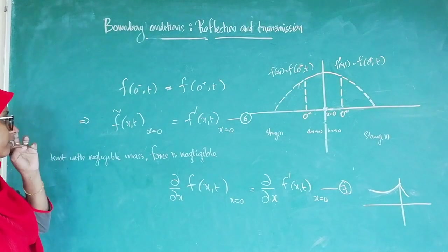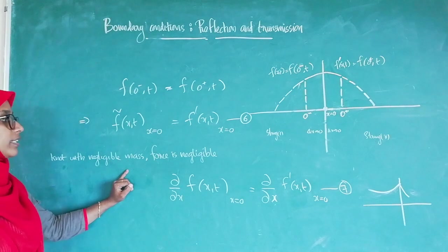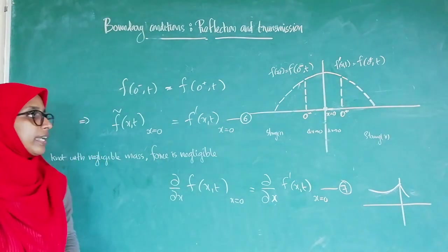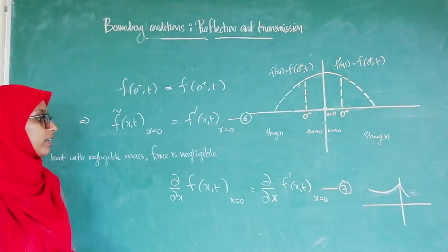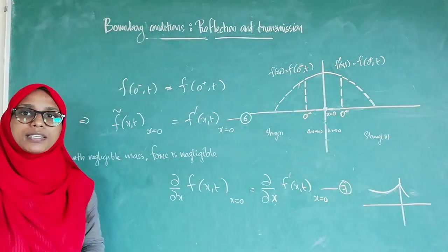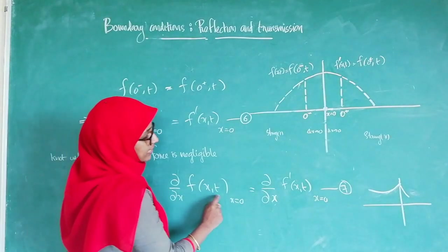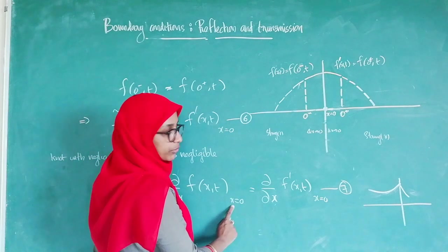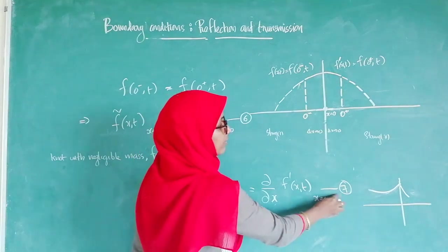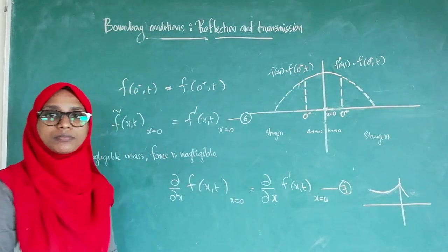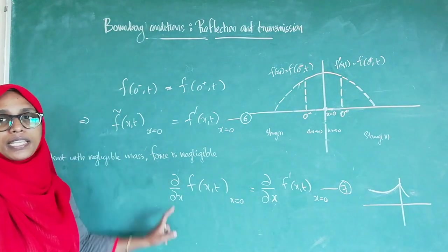Now consider the case where the node has negligible mass. Then the force is also negligible, and in such a case the derivative of the wave function will also be continuous at the node. That is, ∂/∂x of F(X,t) at X=0 equals ∂/∂x of F'(X,t) at X=0 — equation 7. We derive the boundary conditions using these two equations.